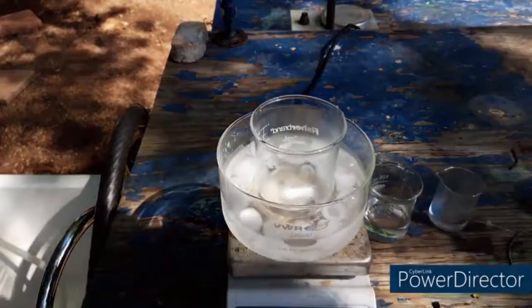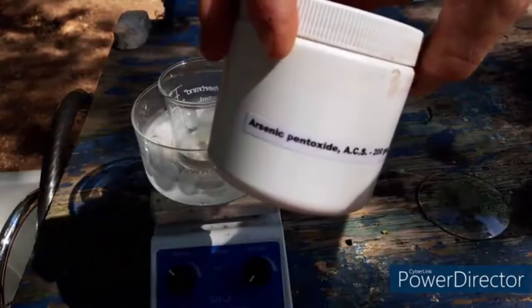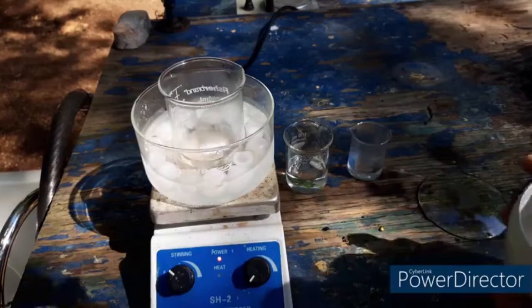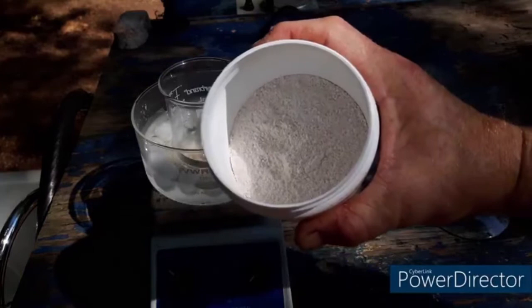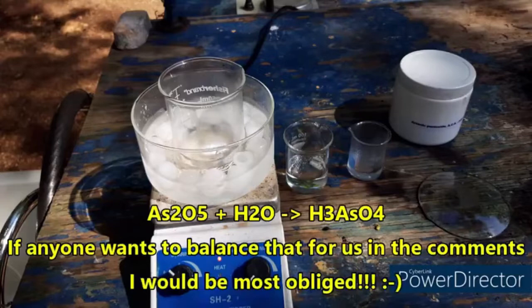This is our arsenic acid that I made from dissolving arsenic pentoxide into water. For our arsenic pentoxide I have this. This was sent to me by the gayest person on YouTube. We have a fifth of a kilo of arsenic pentoxide. Look at it, it's beautiful, fucking beautiful. I got some arsenic trioxide too. So you dissolve arsenic pentoxide in water, you get arsenic acid.